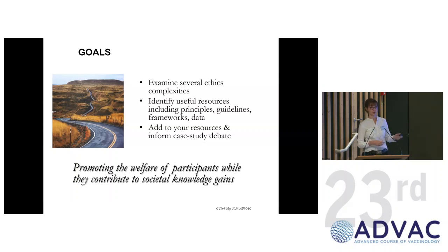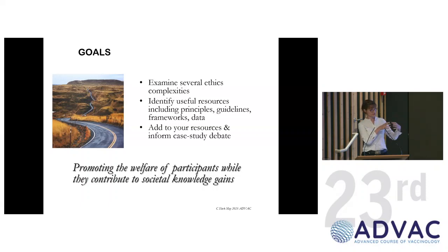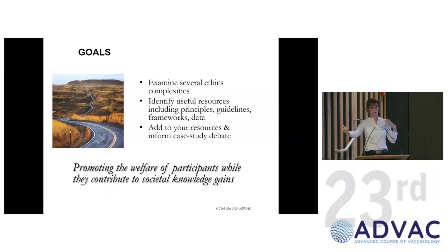Most of you will know that research ethics tries to adjudicate between the claims, rights, and welfare of participants enrolled in trials in the here and now, but also another group — the hypothetical beneficiaries of knowledge and interventions in the future. It's really the trying to adjudicate between the claims of both of those two groups that makes it complex — not impossible, but complex.